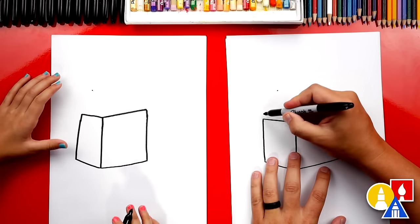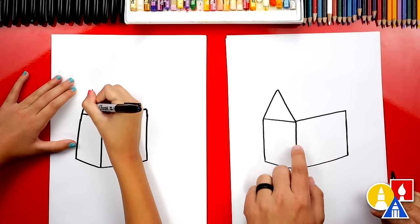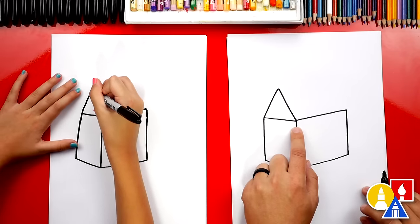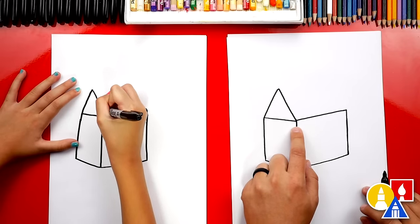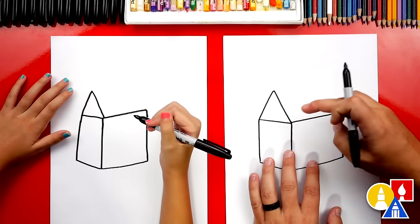Then we're gonna draw a line that connects up to the point and then back down to the center. And what shape is this? That's a triangle shape. Good job. Thank you. Looks like we're drawing a house. Oh yeah, it does look like we're drawing a house. This is the roof.